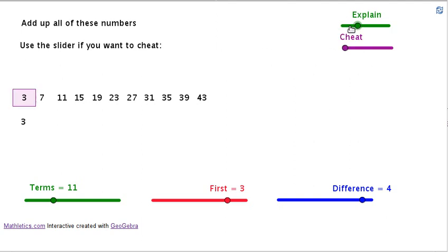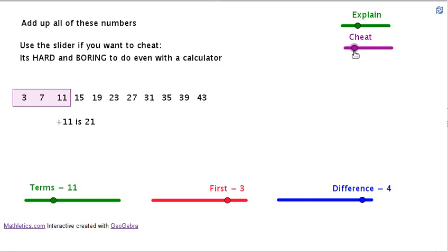So here we go, we're doing it the hard way to start. We just add up the numbers. We're going to cheat because we have a computer. 3 plus 7 is 10, plus 11 is 21, plus 15 is 36, plus 19 is 55, plus 23 is 78.